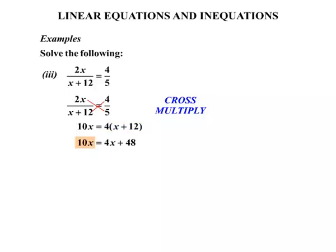Now we've got 10x on this side. On the other side, we have 4x. That'll come over and become minus 4x. So we'll have 10x minus 4x, that's 6x. And then we have 48 there. And if we have 6x equals 48, you can probably do it in your head. Therefore, x must equal 8.